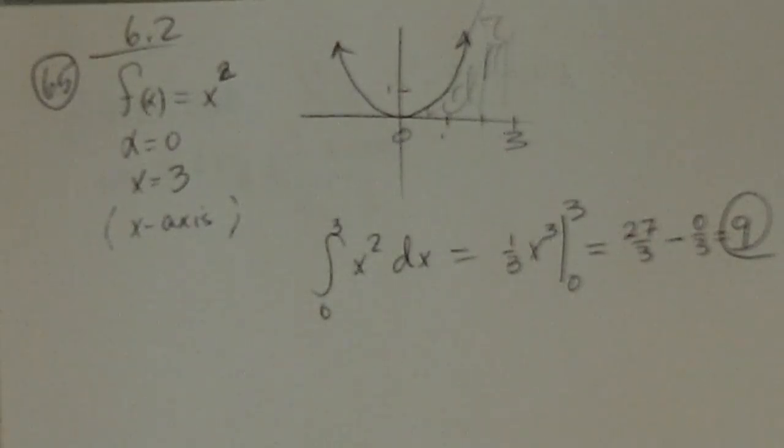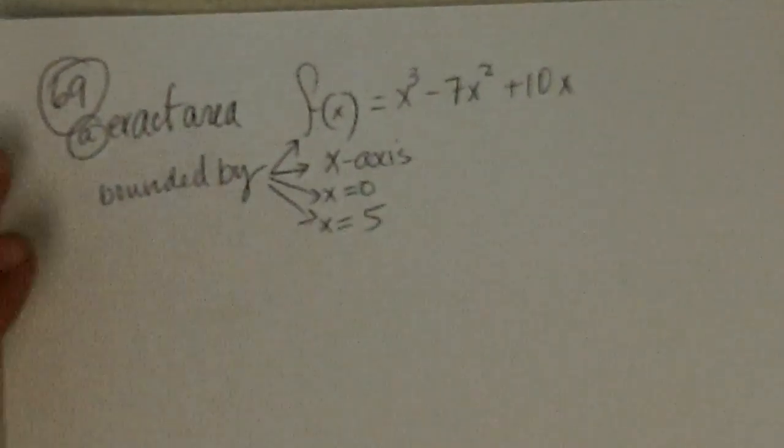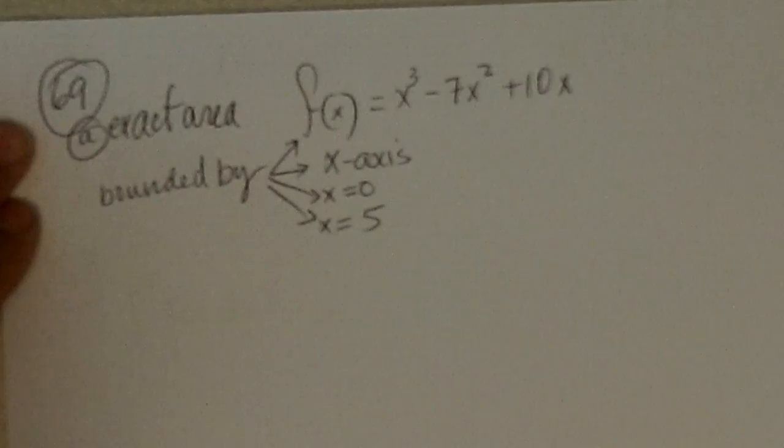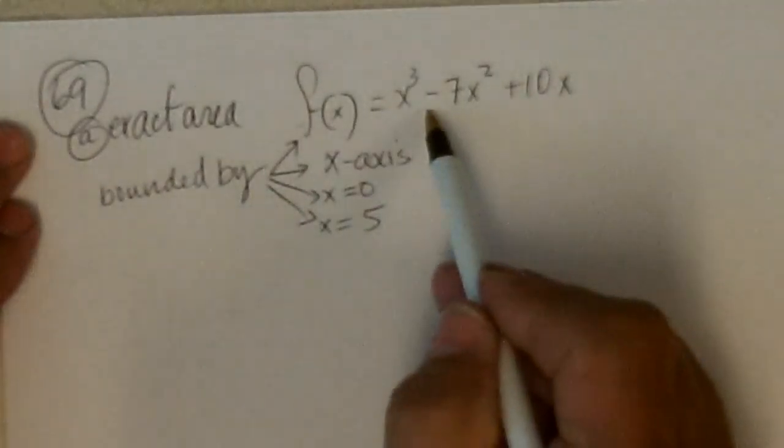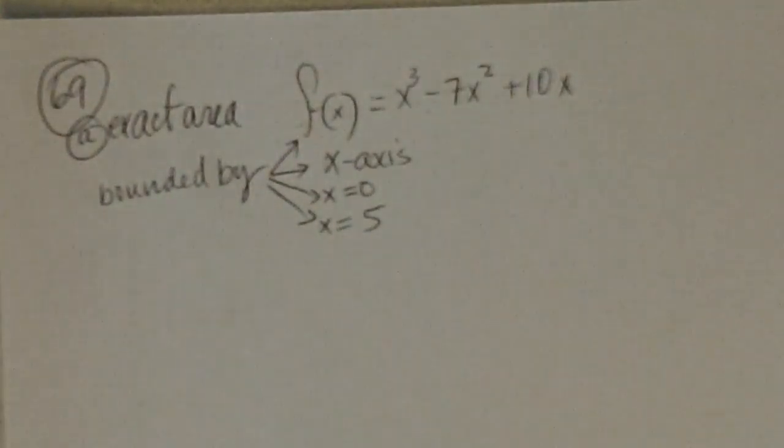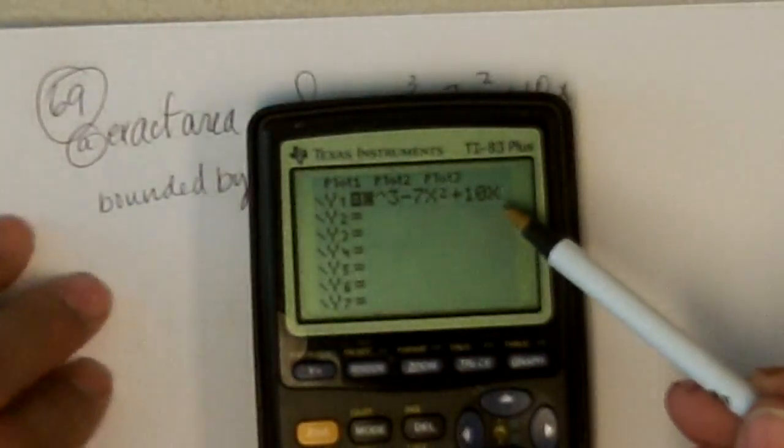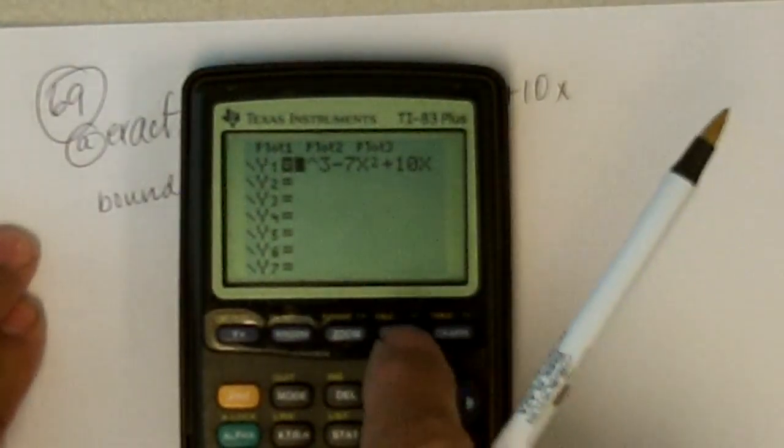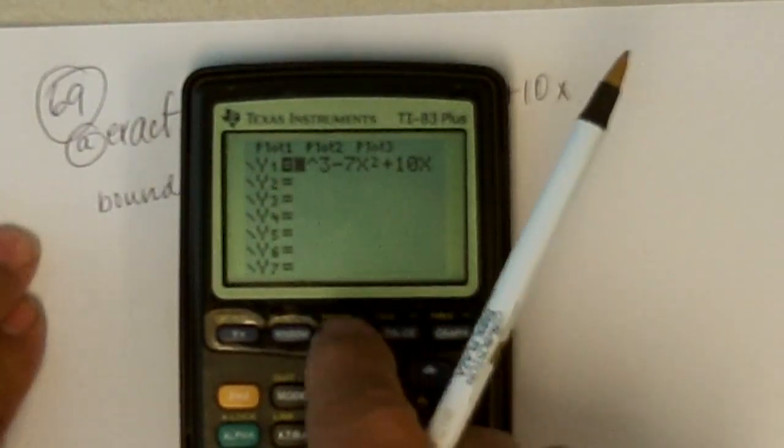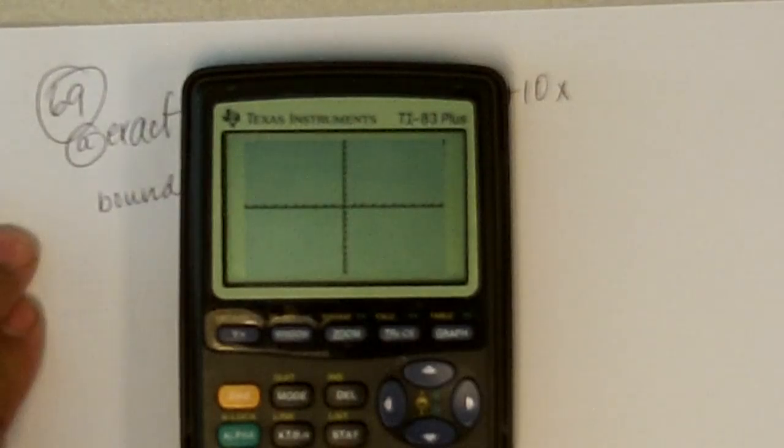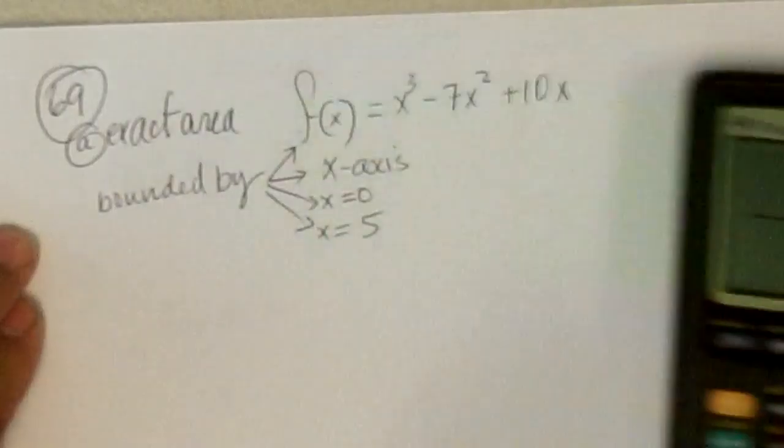I think that's all it asks for. 69, it says find the exact area. So we're going to take a look at this one. So on my calculator, I've got to type in, it looks like I've already typed it in, x to the third minus 7x squared plus 10x. And let's take a look at this, zoom 6.